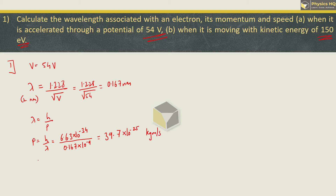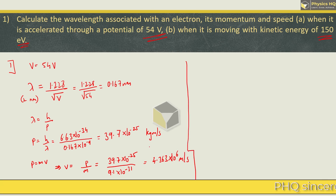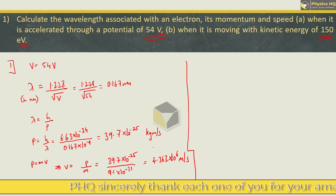Lastly, we are also supposed to find the speed. We know that momentum is mass into velocity, so we find velocity as momentum divided by mass. Momentum is 39.7 × 10⁻²⁵ kg and we are talking about electrons, so mass of electron is 9.1 × 10⁻³¹ kg. This gives us the velocity as 4.363 × 10⁶ m/s. We need to use the log book for solving this. If you have any query on how to use a log book, please click on the top right eye icon and check out that video.